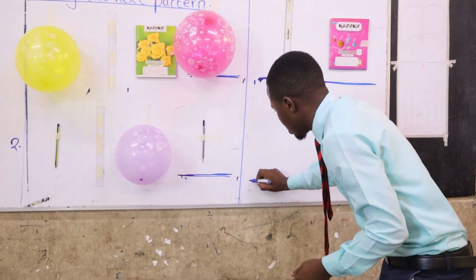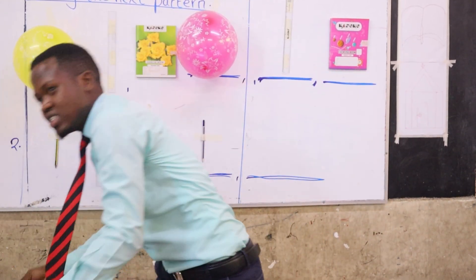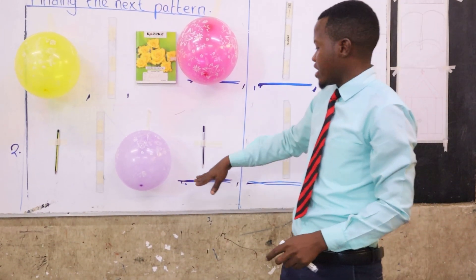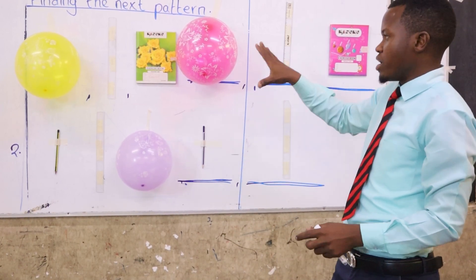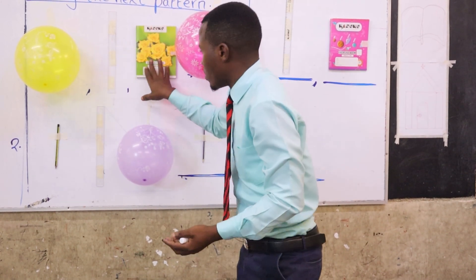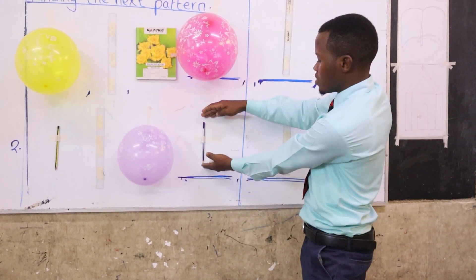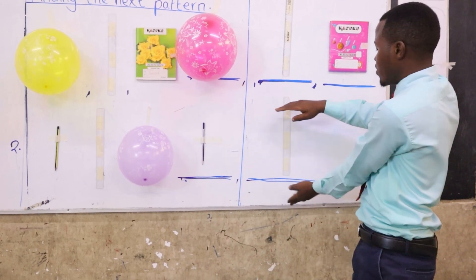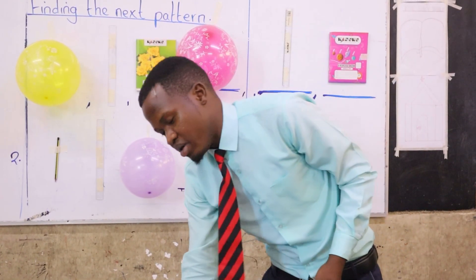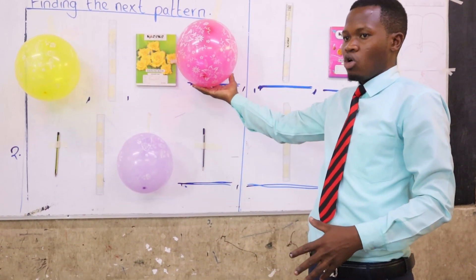And if I put another dash here, the next item is a ruler — clap for him! Very good. So this is how we get the next item in a pattern. In our first example: balloon, ruler, book. In our second example: pencil, ruler, balloon — so the next one will be a pencil, followed by a ruler, and then a balloon. This is how we find the next pattern using different objects.